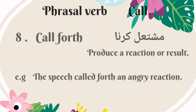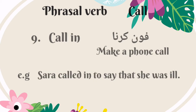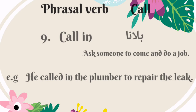The eighth phrasal verb is 'call forth.' It means produce a reaction or result — Urdu mein is ka matlab hai mushtail karna. For example: the speech called forth an angry reaction. The ninth phrasal verb is 'call in.' It means to make a phone call — Urdu mein is ka matlab hai phone karna. For example: Sarah called in to say that she was ill. Another meaning of 'call in' is to ask someone to come and do a job — Urdu mein is ka matlab hai bulana. For example: he called in the plumber to repair the leak.